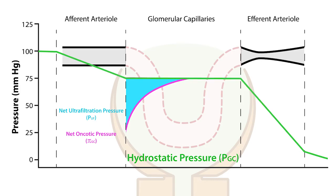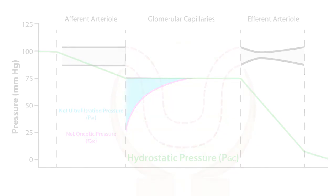This observation is clinically relevant, because some drugs preferentially cause increases in afferent arterial resistance, which lead to decreased GFR. This can prove dangerous, especially in patients with compromised renal function.